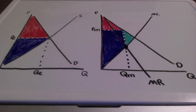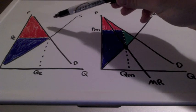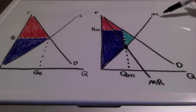In this lesson, we're going to take a look at consumer and producer surplus for the perfectly competitive market and for the monopoly.